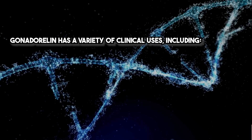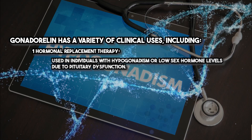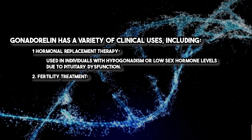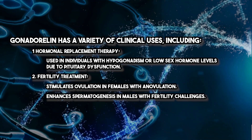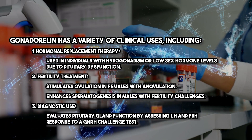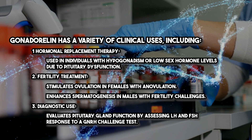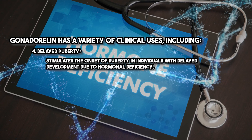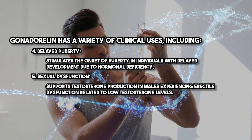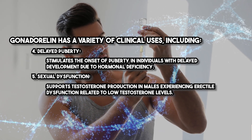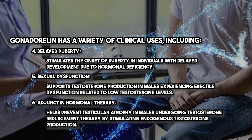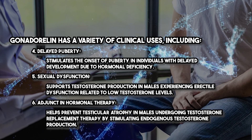Gonadurilin has a variety of clinical uses, including: hormonal replacement therapy, used in individuals with hypogonadism or low sex hormone levels due to pituitary dysfunction; fertility treatment, which stimulates ovulation in females with anovulation and enhances spermatogenesis in males with fertility challenges; diagnostic use, evaluating pituitary gland function by assessing LH and FSH response to a GnRH challenge test; delayed puberty, stimulating the onset of puberty in individuals with hormonal deficiency; sexual dysfunction, supporting testosterone production in males with erectile dysfunction related to low testosterone; and as an adjunct in hormonal therapy to prevent testicular atrophy during testosterone replacement therapy.